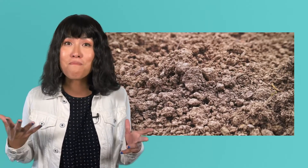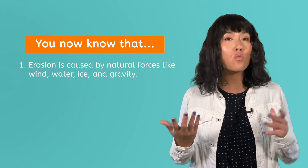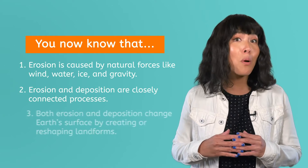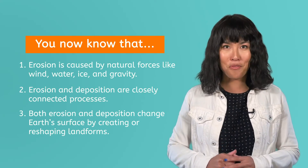That's just another example of the many processes that shape the Earth's surface at work. So, let's review what we learned today. You now know that erosion is caused by natural forces like wind, water, ice, and gravity. Erosion and deposition are closely connected processes. And both of these processes change Earth's surface by creating or reshaping landforms. We've learned a ton about the processes that shape the planet Earth, so be sure to put your new knowledge to good use with the games and extension activities to go with this lesson. And remember, in Earth science, as in life, you rock! See you next time!